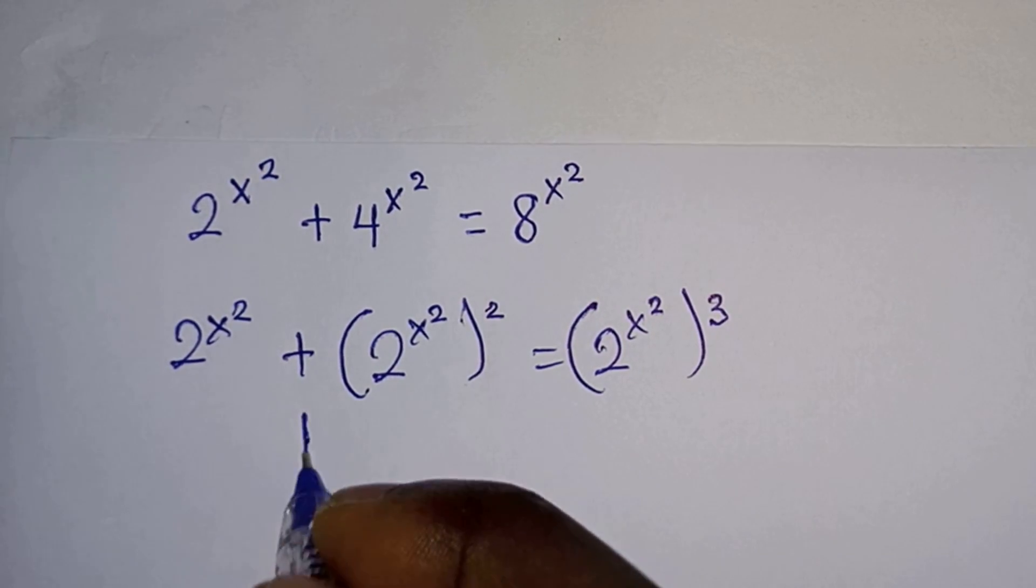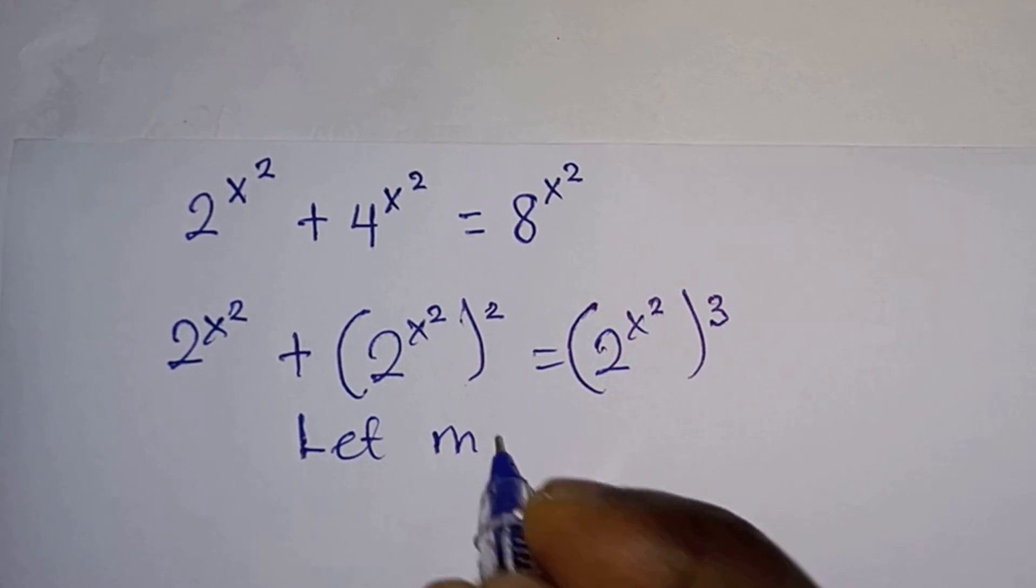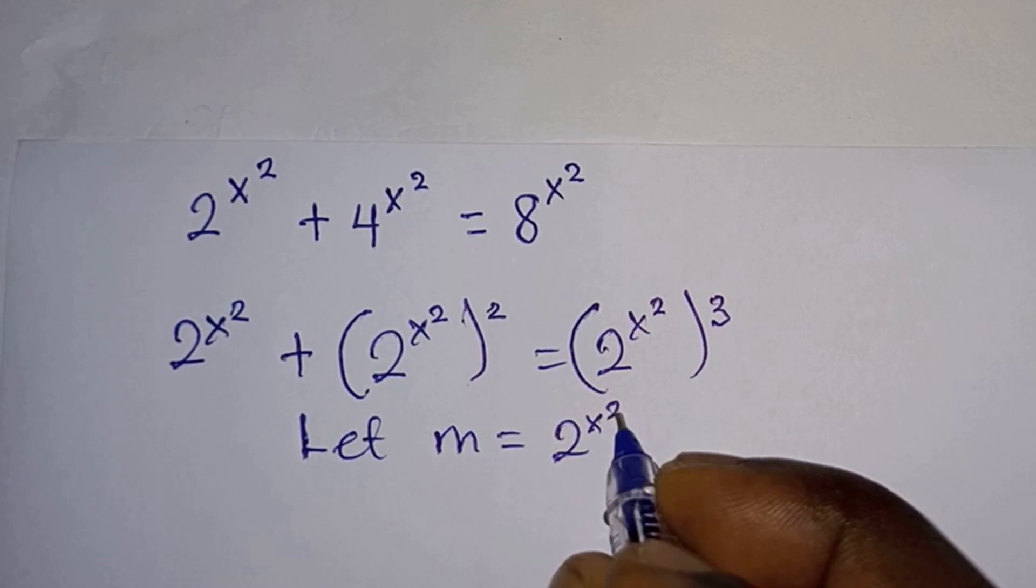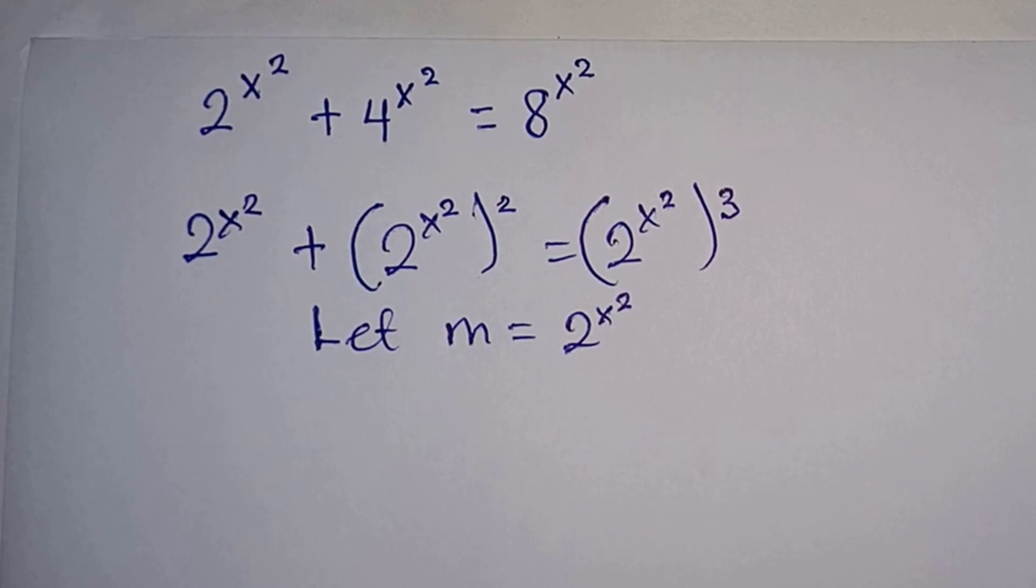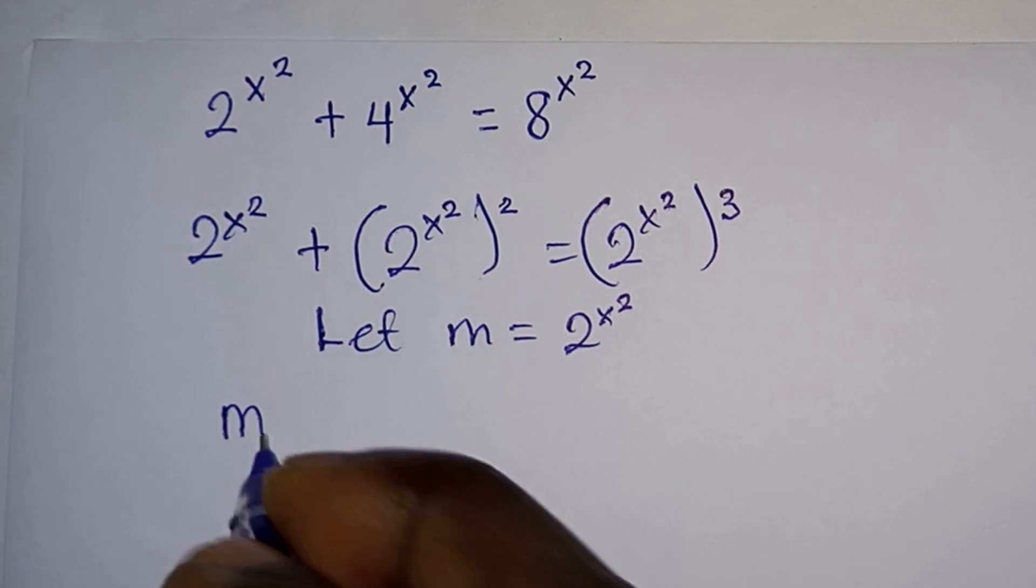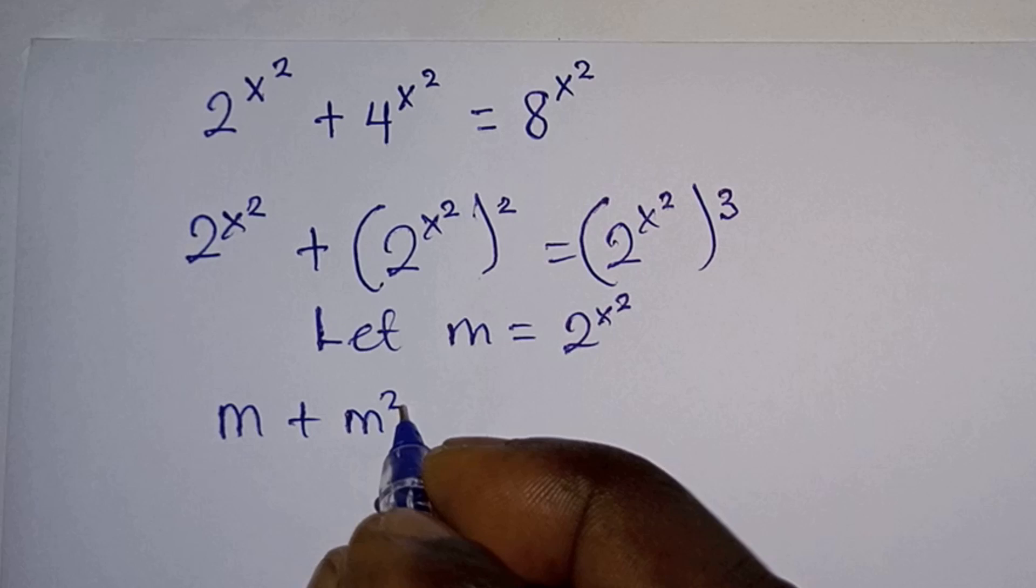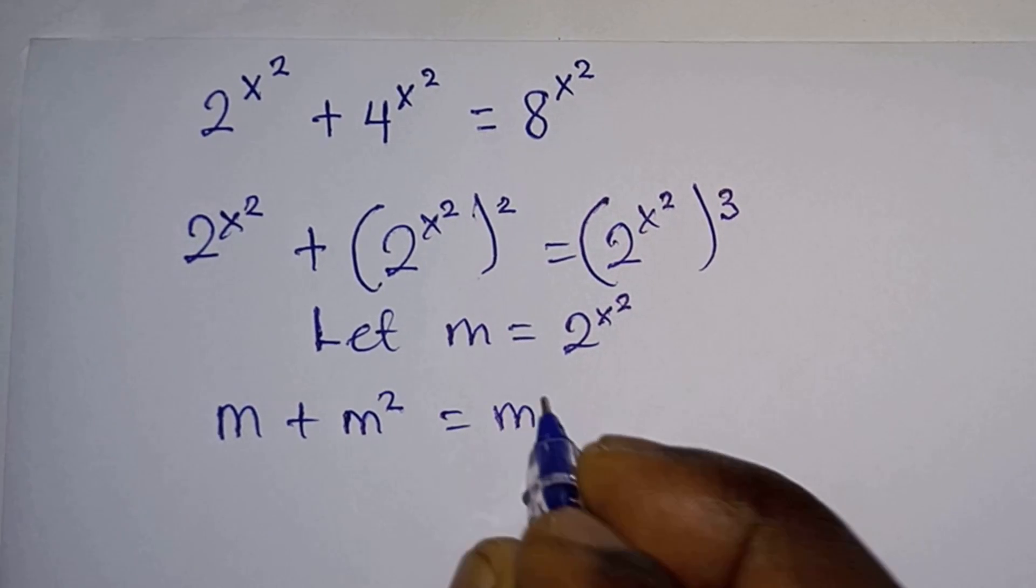Then from here we will let m equal to 2^(x²), so that the equation now becomes m + m² = m³.